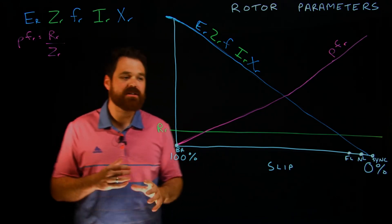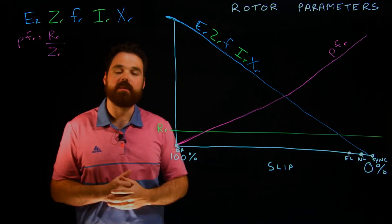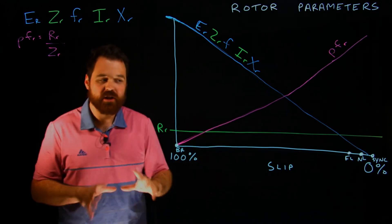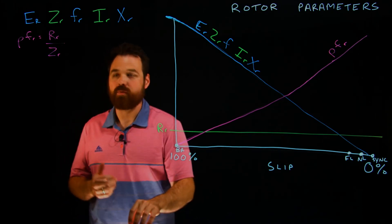So what I call this or what we call this is the easy fix chart, just as a quick kind of memory tool, easy fix, just to kind of remember basically what's happening inside of a rotor.